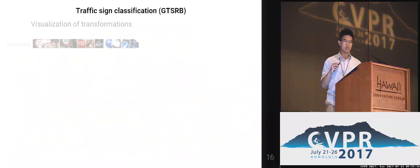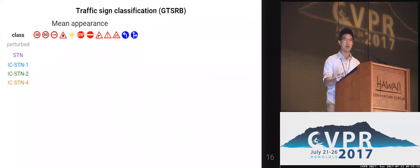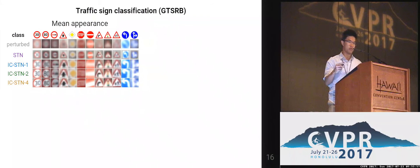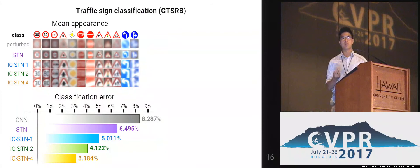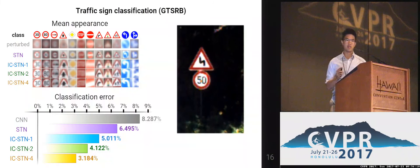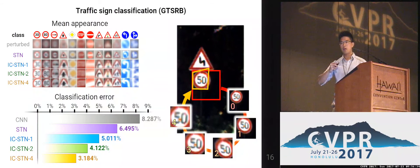Now we can look at a more challenging dataset, such as traffic sign classification. We can see that STN still exhibits boundary effects. Looking at the mean appearance, ICSTN also learns to align the traffic signs together quite well, better than STN and the original CNN. Especially for speed limit signs, where 30 and 80 are a lot sharper. The classification error we get is consistent with the results from MNIST. This suggests that we might be able to use a cheap detector to get a rough estimate of the traffic sign location, and then use ICSTN to better align the traffic sign and jointly classify the traffic signs.